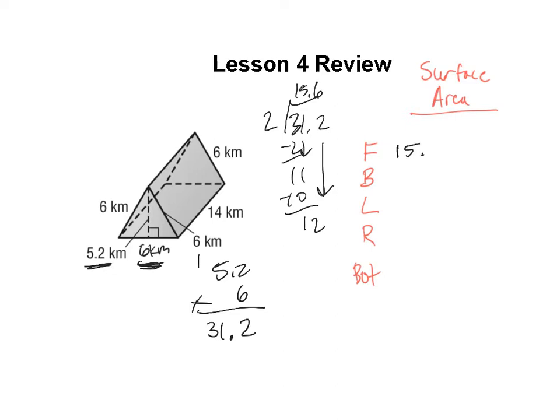So the front and back triangles — remember to line up your decimal places carefully, because when you're adding decimals you just drop the decimal place straight down. It's important to add them up. Now let's get the left and right side, so again I'll go to my red pen here.